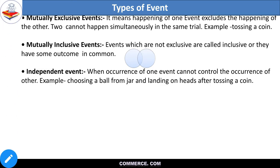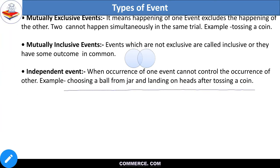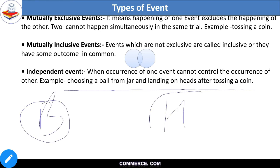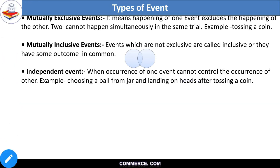Now independent event. When occurrence of one event cannot control the occurrence of the other, that is an independent event. For example, if I toss a coin and separately pick a ball from a bucket, what happens to one does not affect the other. I will toss — whatever happens to the coin does not control the ball selection. These are different events. One does not control the other — that is independent.